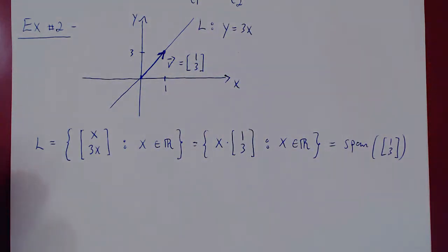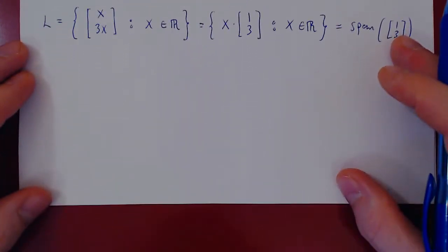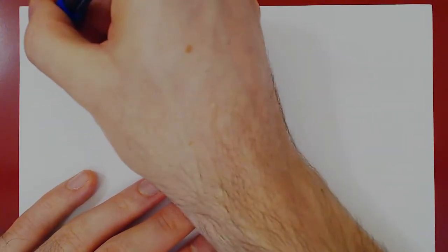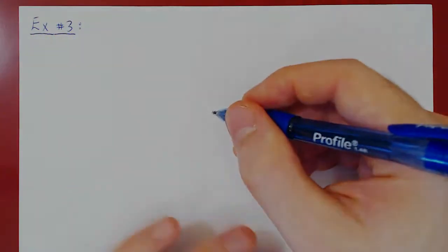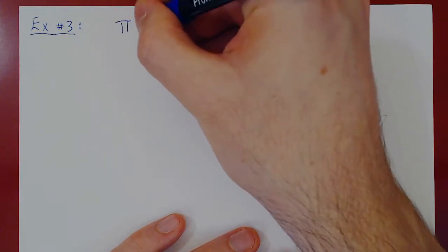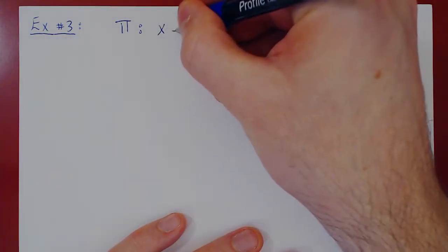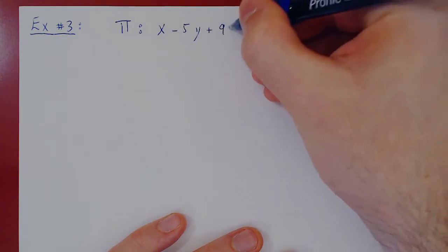Let's do one more example: a plane in R3 passing through the origin. Take the equation x − 5y + 9z = 0. We want to find the points on this plane explicitly by solving the linear equation.